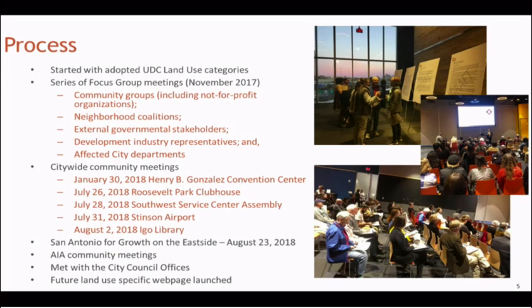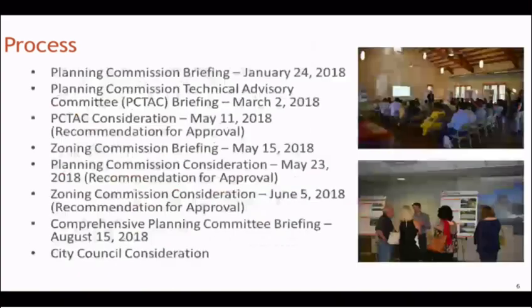The community engagement effort included focus group meetings, citywide meetings with residents, outreach with organizations like SAGE, and engagement with staff in council offices. The Comprehensive Plan Committee forwarded these amendments back to City Council following a series of community meetings conducted by the local chapter of the American Institute of Architects. The formal adoption process included briefings to committees and consideration by both the Planning Commission's Technical Advisory Committee and the full Planning Commission and Zoning Commission. Both commissions recommended approval to City Council with a unanimous vote.